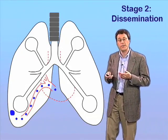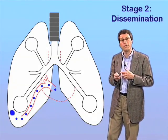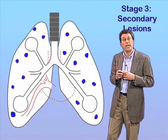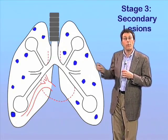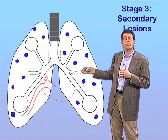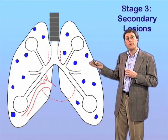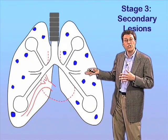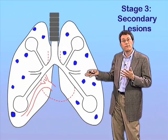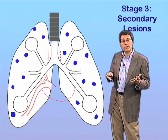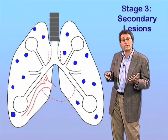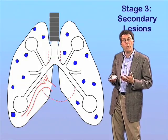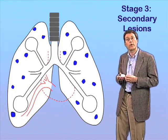This process of dissemination through the lymphohematogenous route is critical for establishing infection at secondary sites within the lungs as well as within extra-pulmonary organs. The lung is, of course, the primary target of tuberculosis — that's its preferred niche, and that is the location from which the bacterium disseminates to secondary hosts. But in about 10% of all cases of TB, there is involvement of one or more extra-pulmonary organs as well.